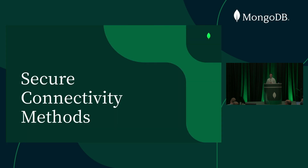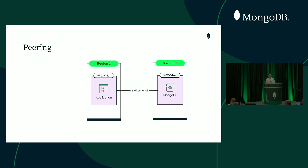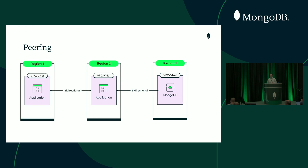Now that we know the connections we have to make, let's talk about doing them securely. The first option is peering — a bi-directional connection between two VPCs or VNets, so resources in one can access resources in the other as if they were in the same network. Peering is bi-directional, which is sometimes what you want, but its other drawback is that it does not allow for transitive connectivity. Every unique combination of VPCs needs another peering connection. Adding more VPCs means adding more connections, and as you add more regions and VPCs, this becomes impractical and very hard to manage.